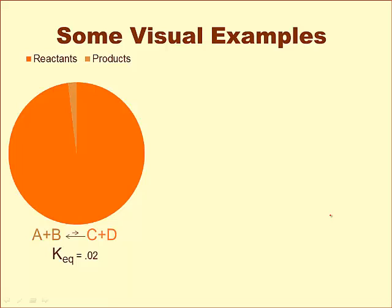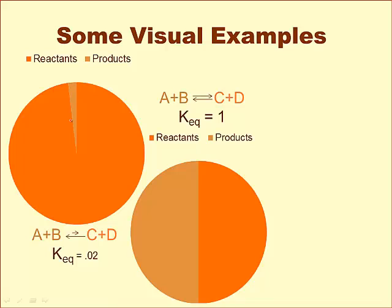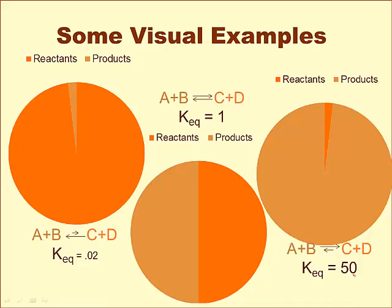Some visual examples of KEQs. A very small KEQ, like 0.02 — the arrow is pointing backwards toward A and B because it's making more reactants than products. The graph shows reactants much larger than products — it's very reactant favored. What if KEQ is exactly 1? That's extremely rare, but both reactions occur at the same rate, giving the same concentrations of reactants and products — a 50-50 split. A better reaction would have a very large KEQ, like 50 — definitely favored towards products, making a lot of product and leaving only a small amount of reactant.